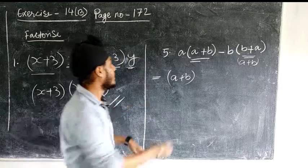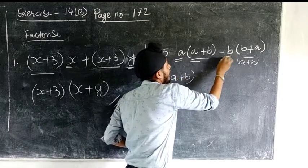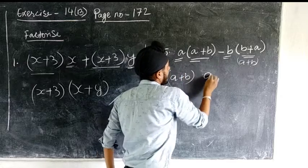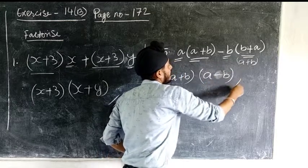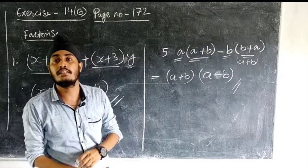Clear? Now, what is uncommon or left out? a minus b. So, (a-b). This way, factorization of this expression is done.